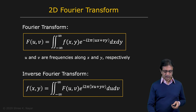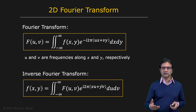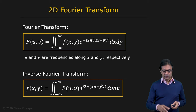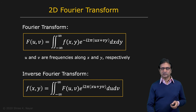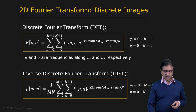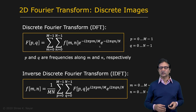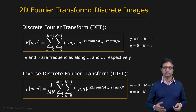And here is the expression for the inverse Fourier transform. Now, we know that images are discrete, so we need to map these expressions into the discrete forms. In this case, mn are the spatial coordinates and pq are the frequency coordinates. With these expressions, you can now find the Fourier transform of a discrete image.